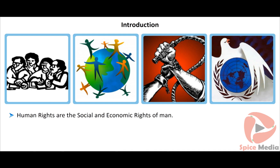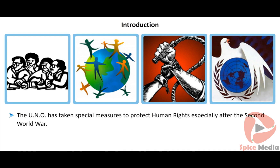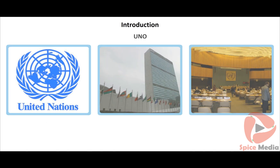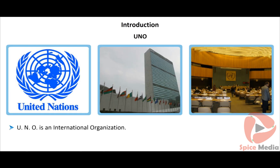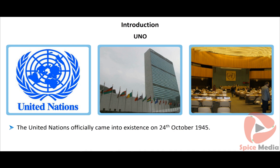Human rights are the social and economic rights of man. The UNO has taken special measures to protect human rights, especially after the Second World War. Every year, 24th October is celebrated as UNO Day. UNO is an international organization with powers to enforce international law, security, economic development, and social peace. The United Nations officially came into existence on 24th October 1945.